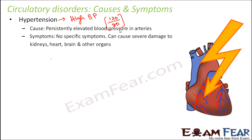There are no specific symptoms as such, but hypertension can cause severe damage to the kidneys, heart, brain, and other organs. When blood pressure goes too high, it can cause heart failure, heart attack, or even a brain attack — so it can be fatal. External risk factors that can be controlled include smoking, alcohol, obesity, and genetic history. A proper diet, good exercise, and maintaining a healthy weight can all help control hypertension.